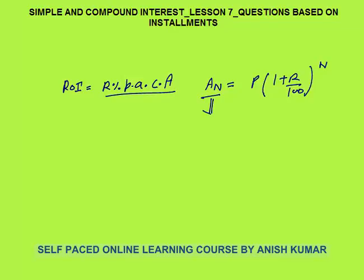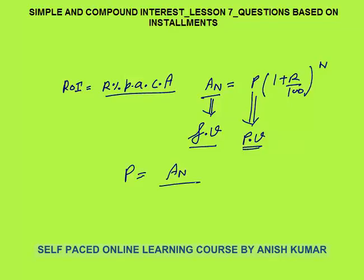The amount can always be considered as a future value, and the principal can be considered as a present value. So we can always calculate the present value and future value when R is given. The present value will be A_N divided by (1 + R/100)^N.